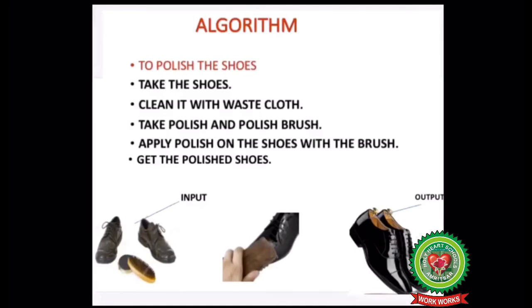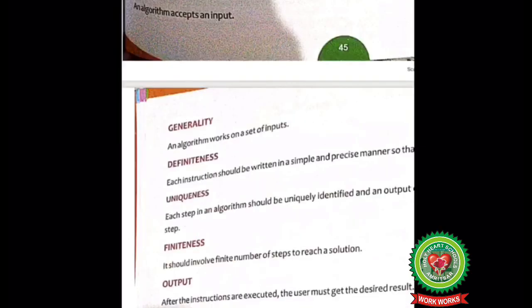The algorithm to polish the shoes will be: Step 1, take the shoes. Step 2, clean it with the waste cloth. Step 3, take polish and polish brush. Step 4, apply polish on the shoes with the brush. Step 5, get the polished shoes. Today we have discussed characteristics of an algorithm with the help of an example. Do practice at home.